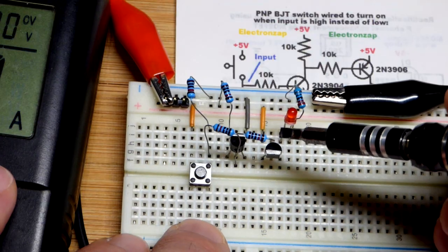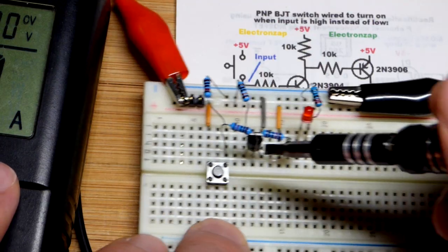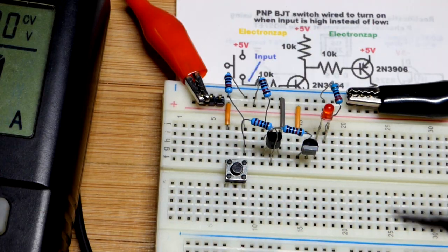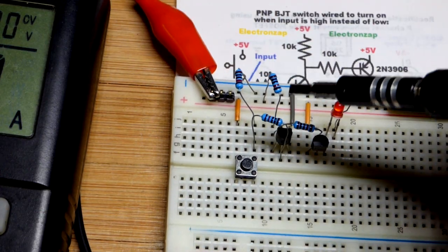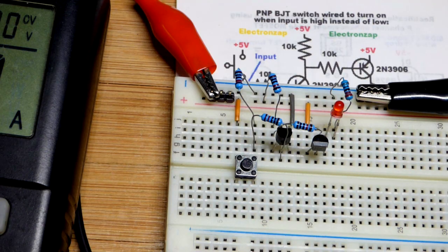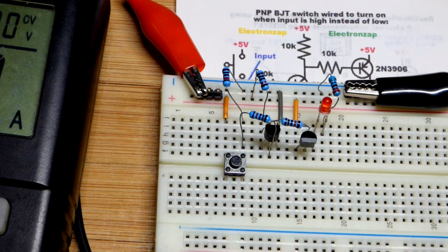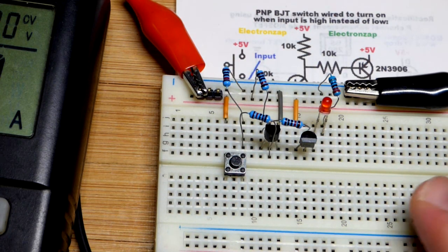If the circuitry you have responds to the opposite signal of what you want, you can just invert it with the opposite type transistor - PNP versus NPN. You can use one to turn on, and when that turns on, it turns the other one on.